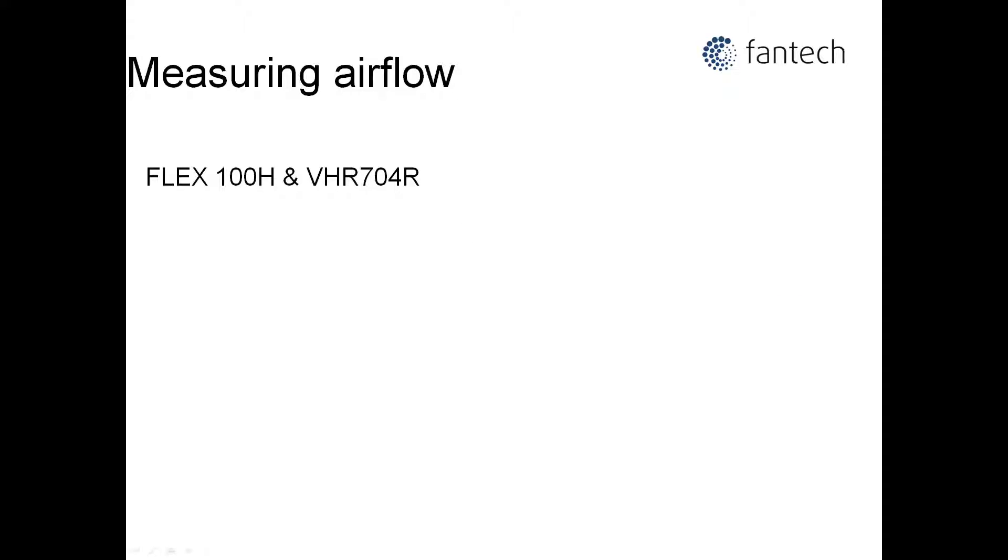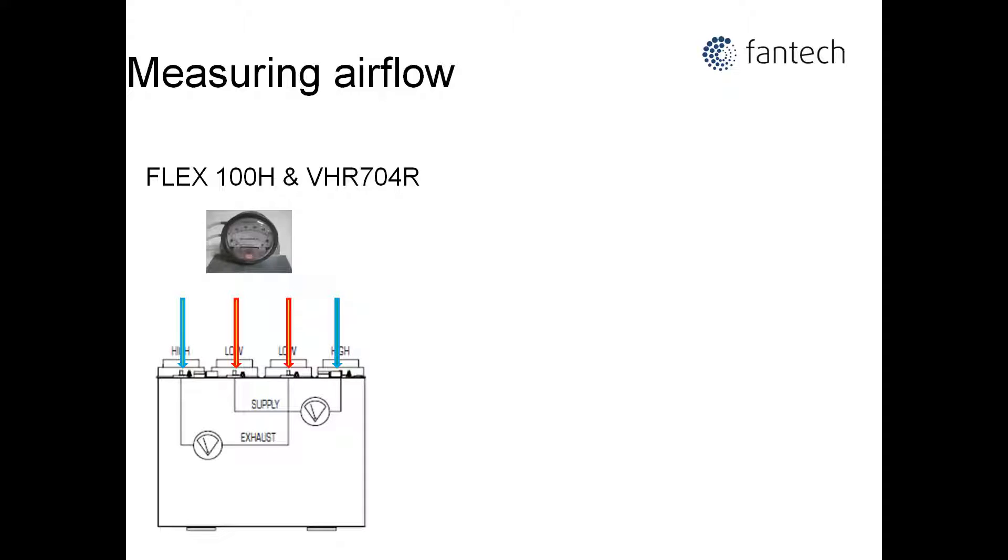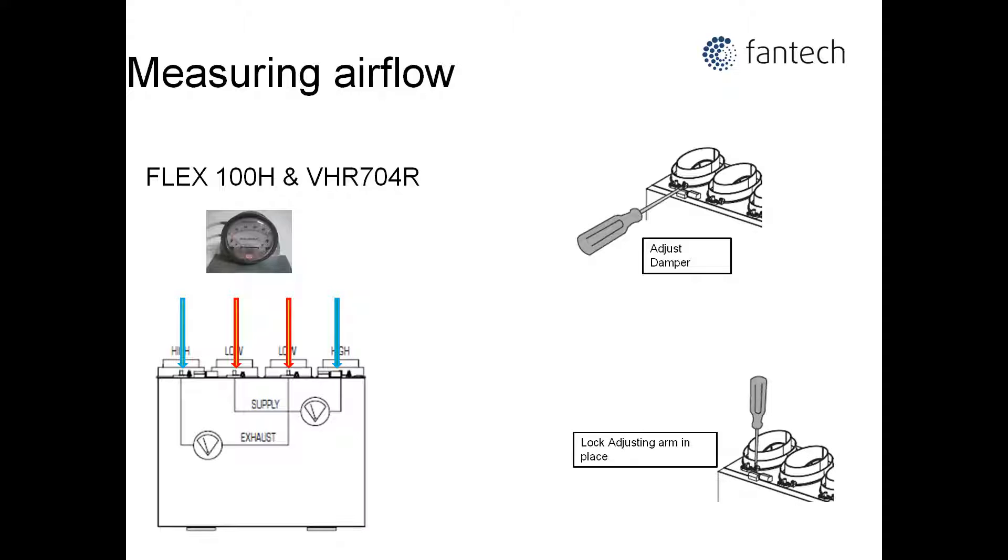A professional would know where and how to use these instruments to take airflow measurements. However, with the Fantec Flex 100H and the VHR 704R, all that is required is a magna helic gauge, as the units have integrated pressure ports and balancing dampers. These dampers are easy to adjust and lock. Let's see how balancing is done in practice.